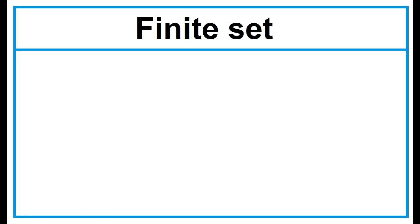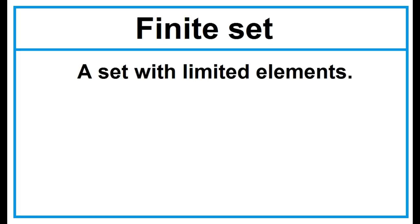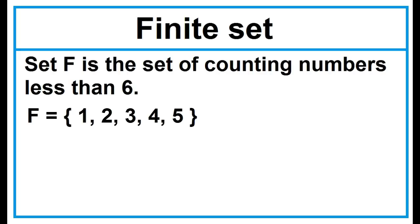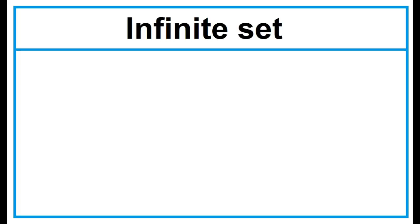Finite Set — a set with limited elements. Example: Set F is the set of counting numbers less than 6. The elements of Set F are 1, 2, 3, 4, 5. The cardinality of Set F is 5.